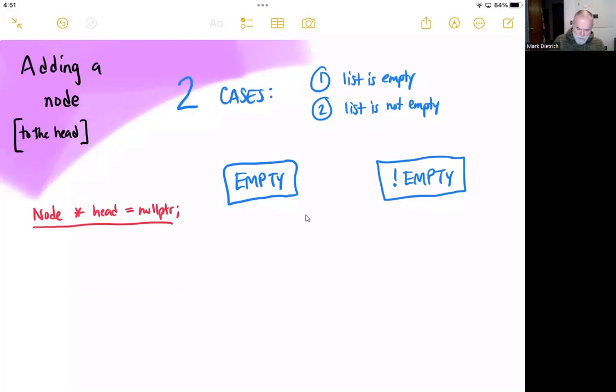So right now, we just have this pointer called head, and it's pointing to the ground. Now, this is the case where the linked list is currently empty. So what we'll do is we will create a node. We can put a value in it. We can say that its pointer is going to point to the null pointer.